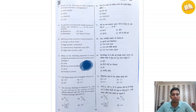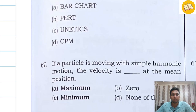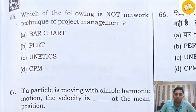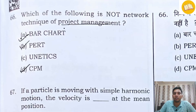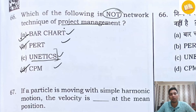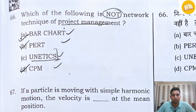We will see question number 66. It is asked: which of the following is NOT a network technique of project management? We already know bar chart, PERT, and CPM as techniques of project management. So the obvious answer is UNETICS, which is not a network technique. There was some doubt about which option it would be, but the answer is UNETICS.